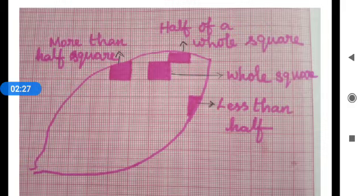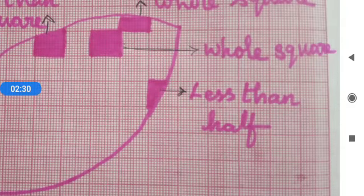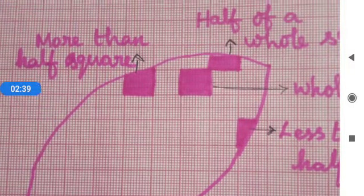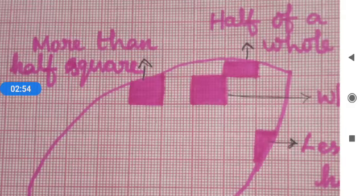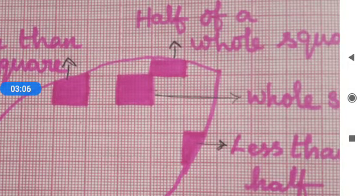Now, count the number of whole squares enclosed within the outline of the leaf — take it to be M. Then, count the number of squares that are more than half — take it as N. Next, count the number of squares which are half of a whole square — note it to be P. Finally, count the number of squares that are less than half — let it be Q.